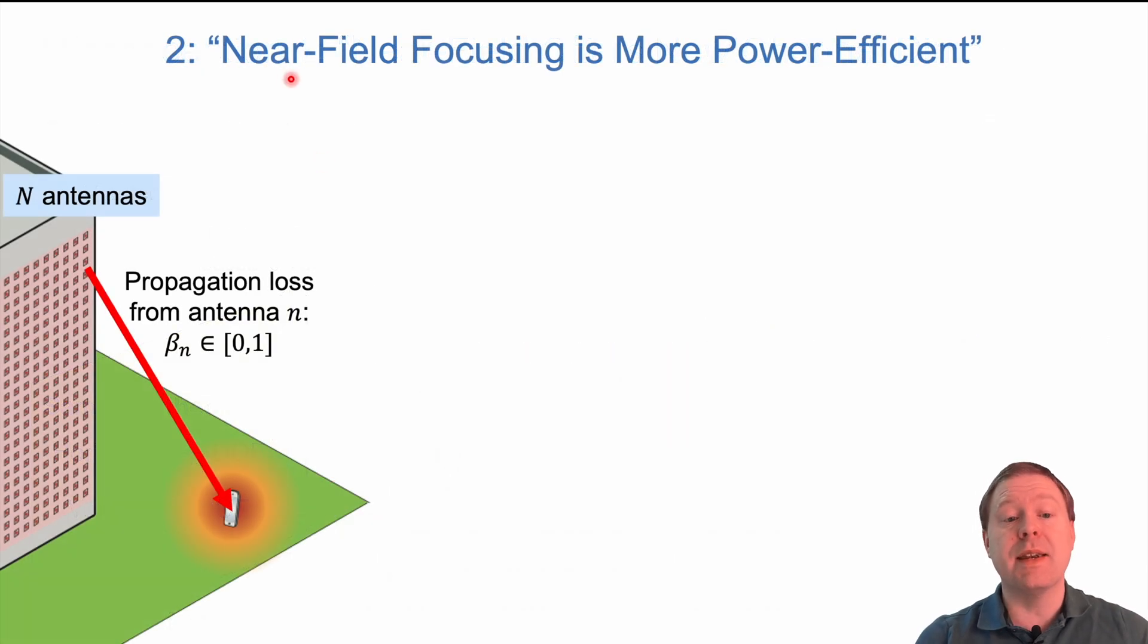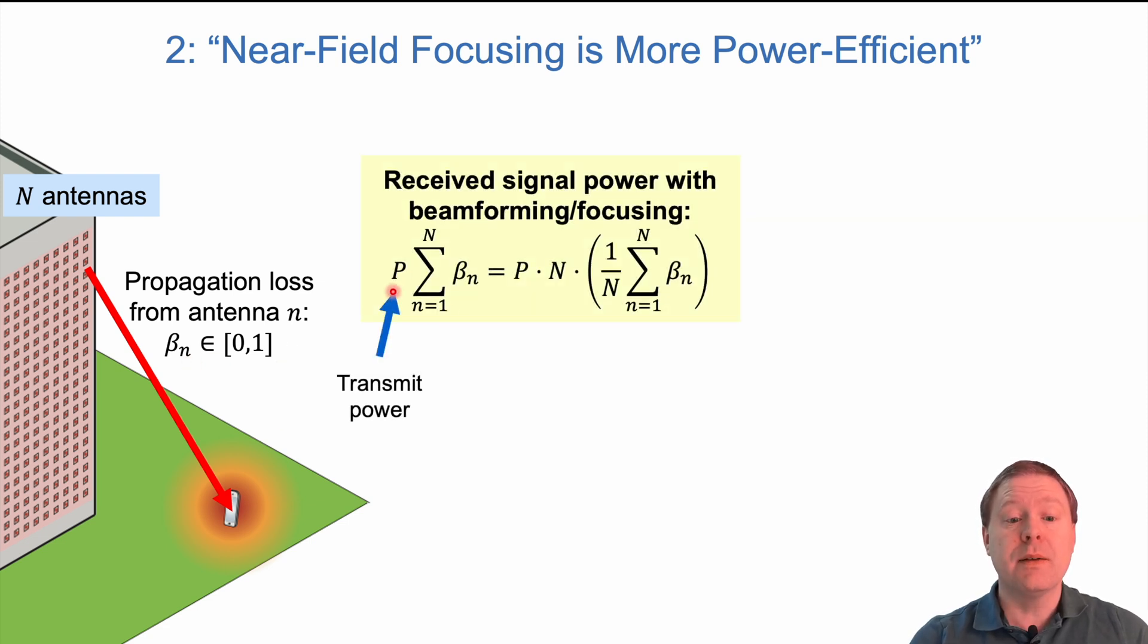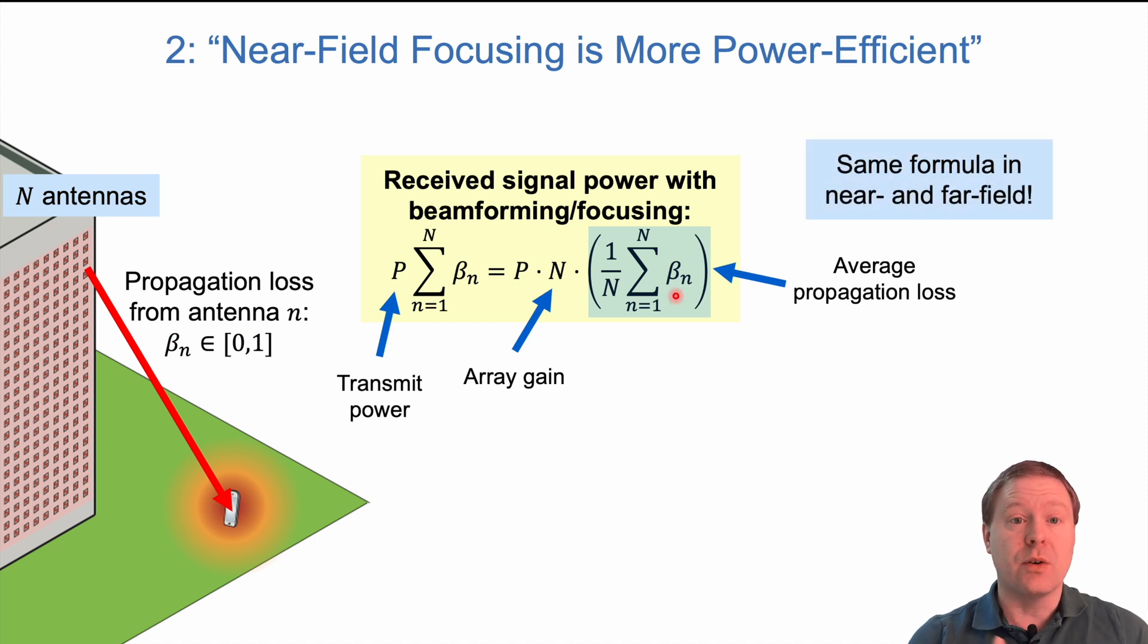The second misconception is that near field focusing is more power efficient than in the far field. Let me break down this for you. We have n antennas at the base station, a user device, and from antenna n we have a certain propagation loss beta n between 0 and 1. If we're transmitting with power p and doing beamforming or beamfocusing, then the received power is the transmit power multiplied with the sum of the beta values. We can rewrite that expression to extract n, the array gain which is proportional to the number of antennas, multiplied with the average propagation loss among all the different antennas. This formula is the same in the near and far field.